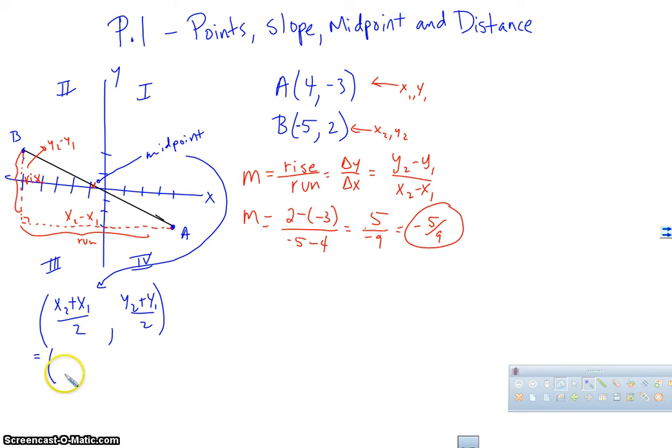So I'm going to have, in this case, I'm going to have 4 plus negative 5 over 2 and negative 3 plus 2 over 2. Now, you have to stay consistent. I did 4 plus negative 5 and negative 3 plus 2. Okay, so we're good there. So we're going to get negative 1 half, comma, negative 1 half. Which looks about right where I drew it. Okay, so this is the midpoint.